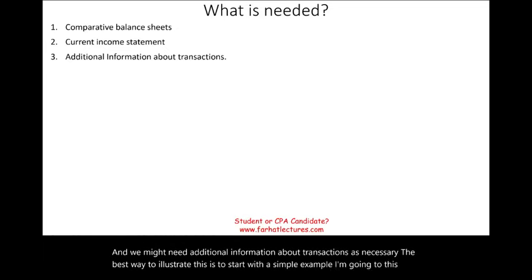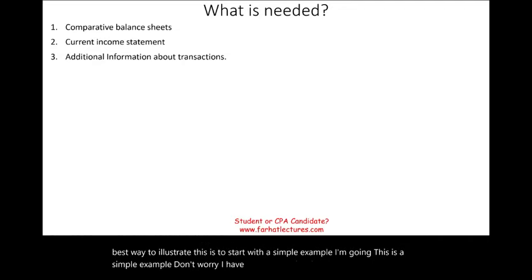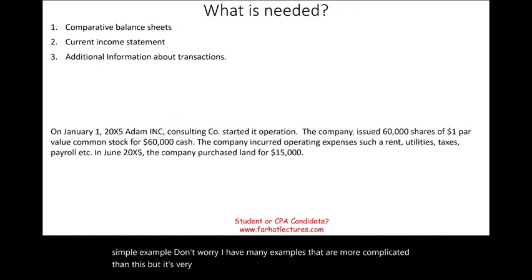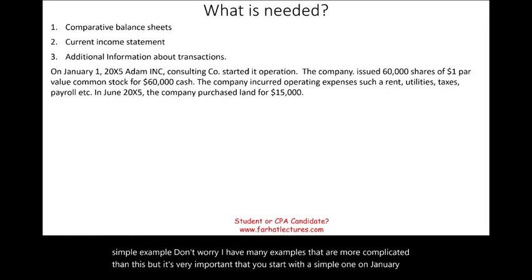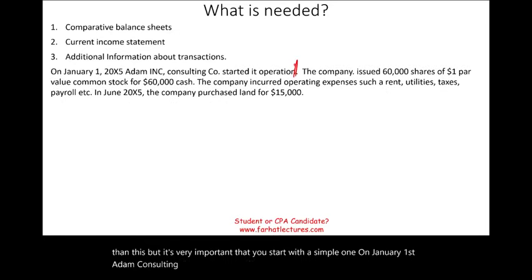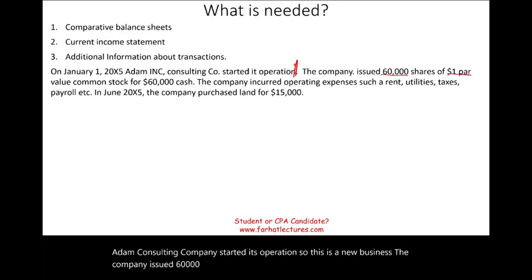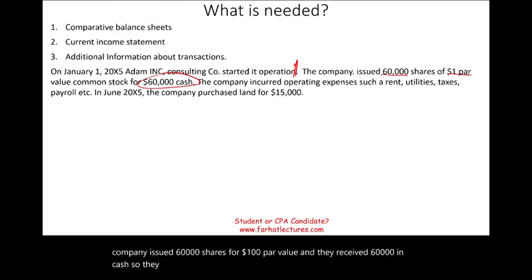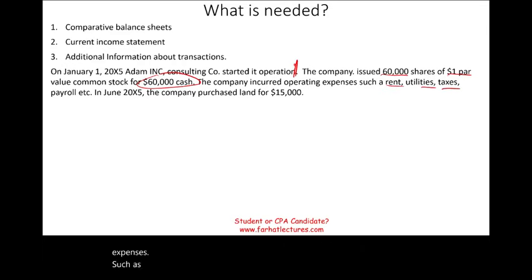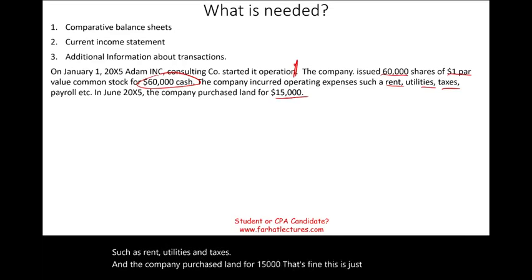This is a simple example — I have many that are more complicated, but it's very important that you start with a simple one. On January 1st, Adam Consulting Company started its operation. The company issued 60,000 shares at $1 par value and received $60,000 in cash. The company incurred operating expenses such as rent, utilities, and taxes, and the company purchased land for $15,000.